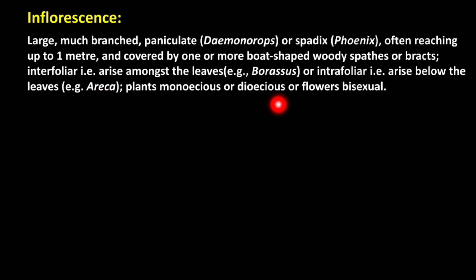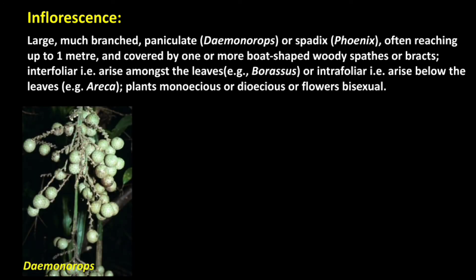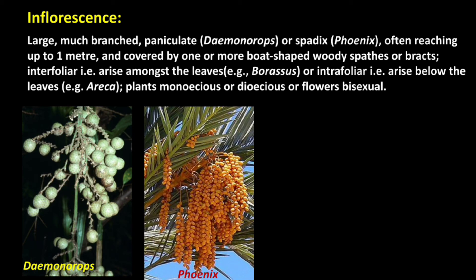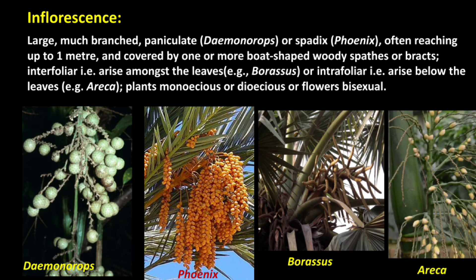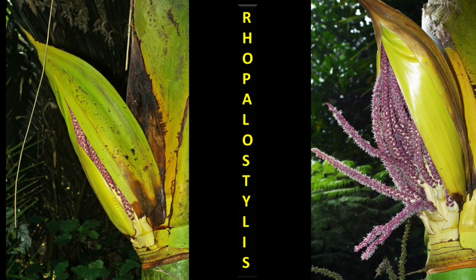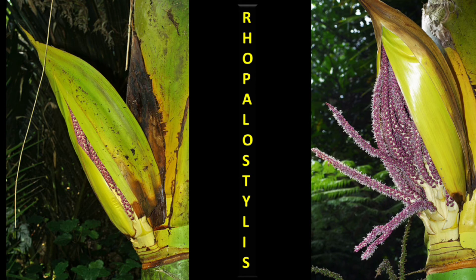Plants may be monoecious or dioecious, or flowers may be bisexual. Paniculate inflorescence is found in Daemonorops, and spadix inflorescence in Phoenix. In Borassus, interfoliar bracts are seen. In Areca, intrafoliar or spathaceous bracts are seen. The spathaceous boat-shaped bracts can be easily seen in the opened inflorescence of Rhopalostylus palm.